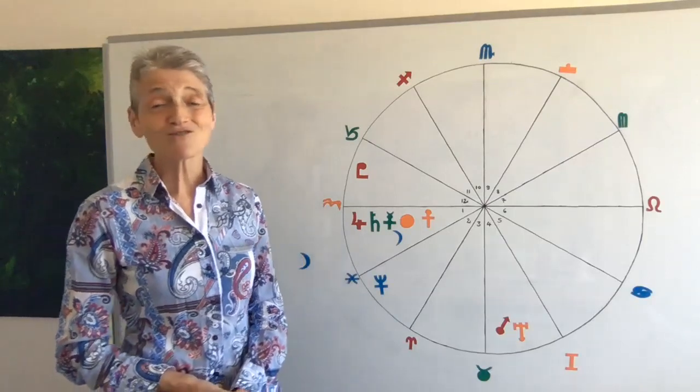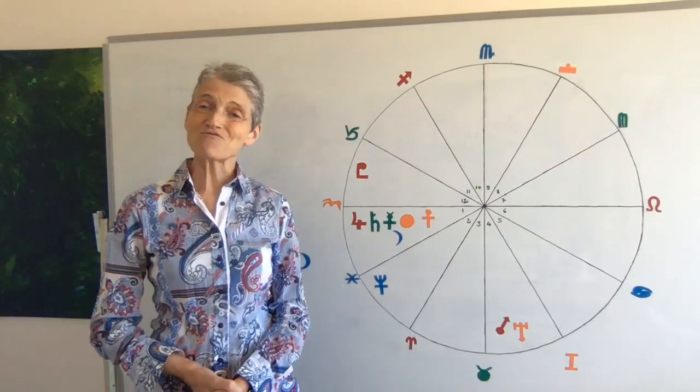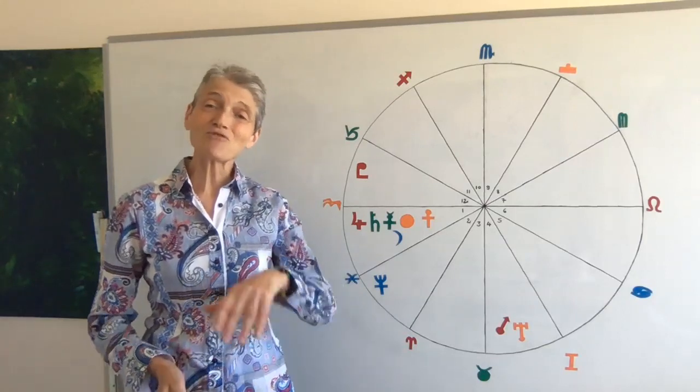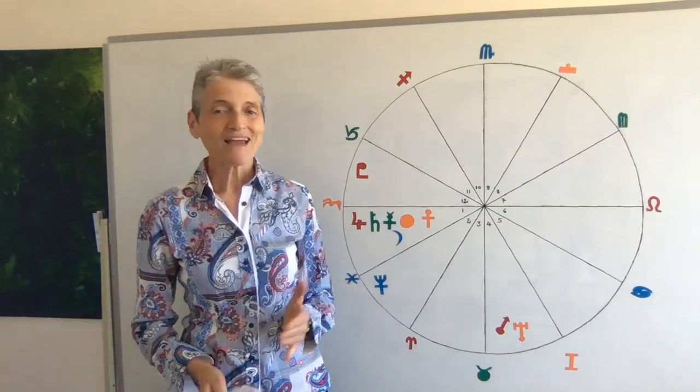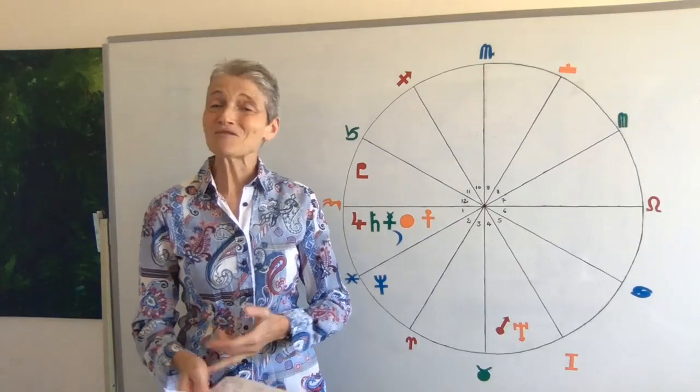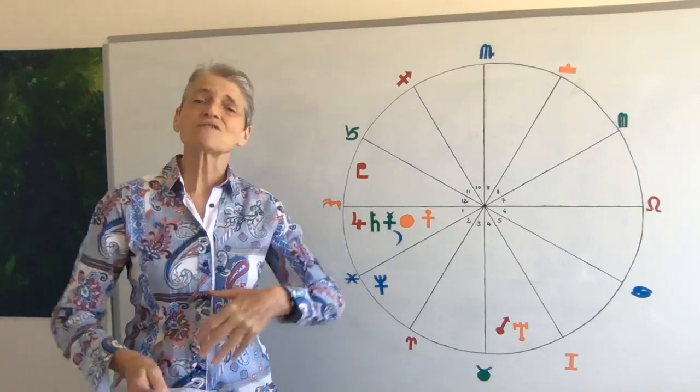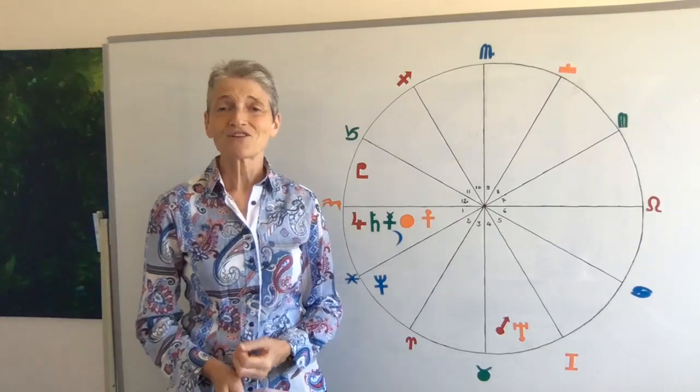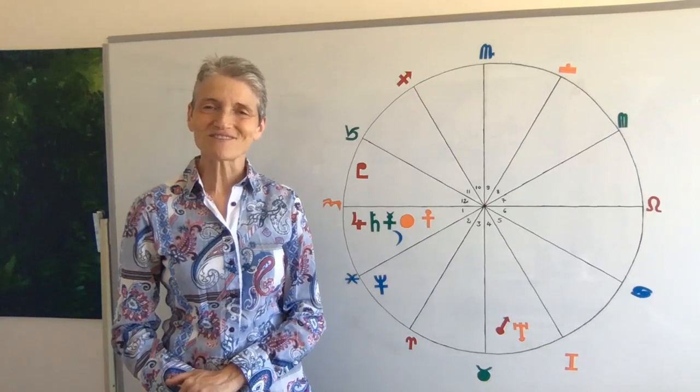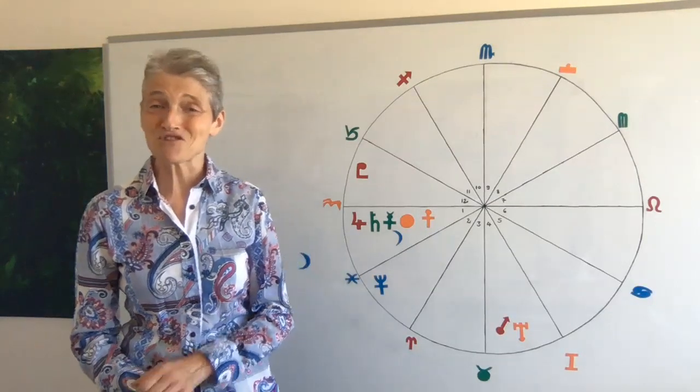Mercury is retrograde in your sign until the 21st, so you might be completing certain projects that you began before the beginning of this month. Any negotiations, anything that you've been getting involved in, can complete during a Mercury retrograde. It's just best not to start something new during a retrograde. And if you do and you've got important documents to sign, then just check them very, very carefully. Double and triple check.